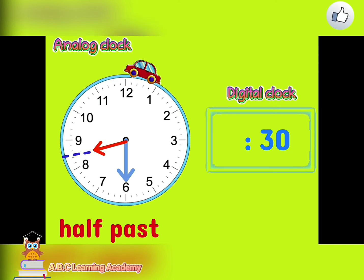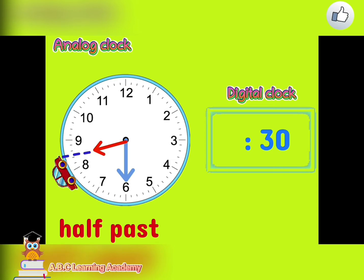Imagine that you are driving a car. While driving the car, it suddenly stopped before you reach your destination. Supposedly, your destination is at number 9, but the car stopped before you reach it. So this situation is similar to telling time by half. In this analog clock, we can say that the time is half past 8.